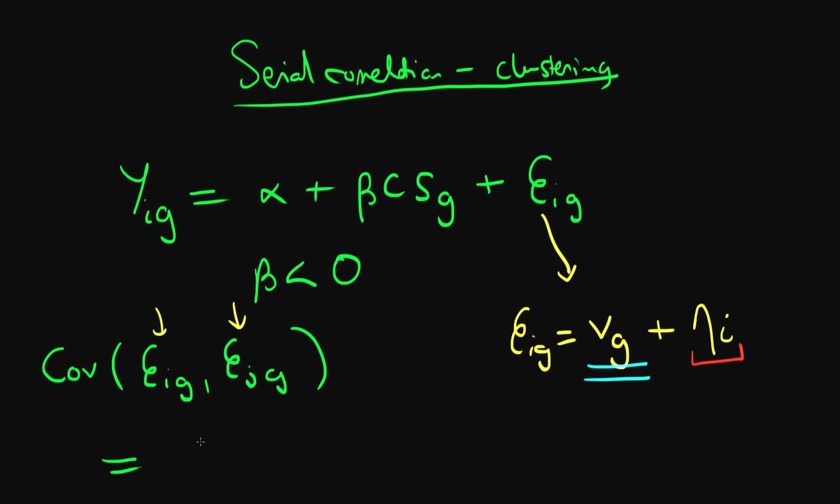So because of this group source of error there is a non-zero value of the covariance of η_iG with η_jG, so in actuality it would be equal to σ_V squared where this is the variance of our group specific factor, and this is a really important source of standard error which comes about due to this group nature or cluster nature of our data.